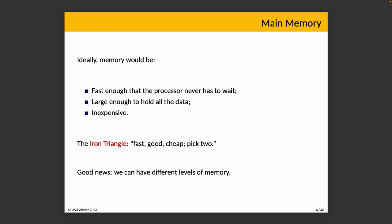Main memory: ideally it would be fast enough that the processor never has to wait for it, large enough to hold all the data of the system, and inexpensive. Readers familiar with reality will recognize this as the iron triangle — fast, good, cheap, pick two. But we don't have to make only one choice. We can have different levels of memory in our system at different sizes, speeds, and costs. A smaller amount of very fast memory costs more, while permanent storage is cheaper because it's slower but larger.